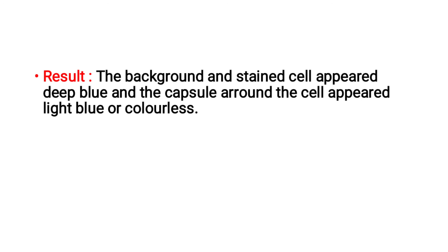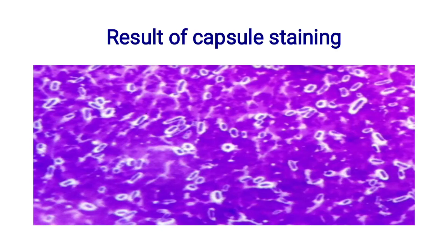What is the result of capsule staining? The background and stained cells appear deep blue in colour, while the capsule around the cell appears light blue or colourless. This is a picture showing the result of the capsule staining method.